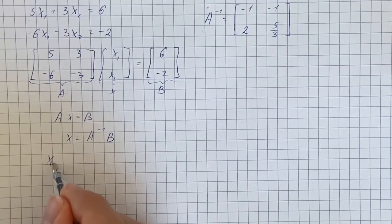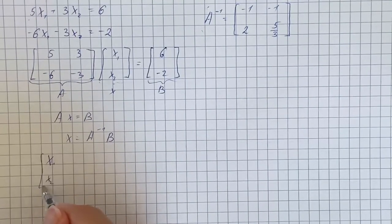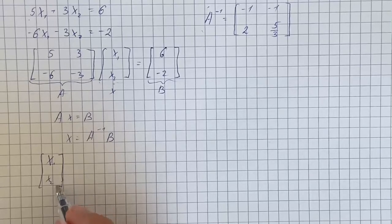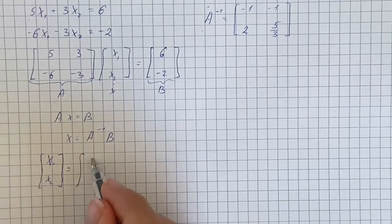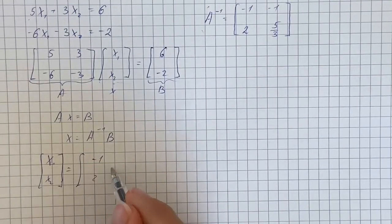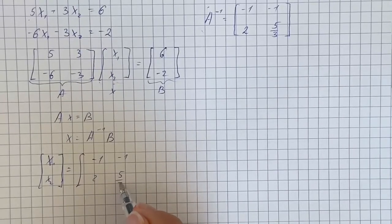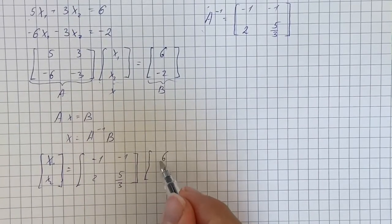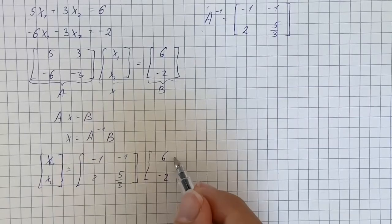So it's going to be x1, x2 equals the matrix -1, 2, -1, 5/3, times the vector 6, -2.